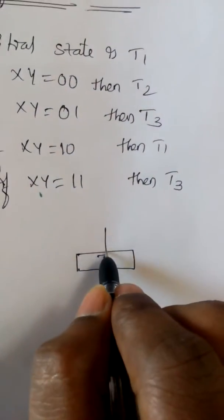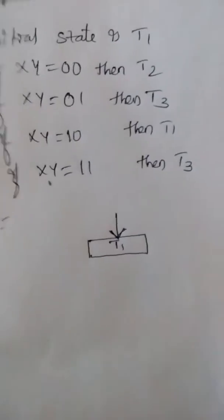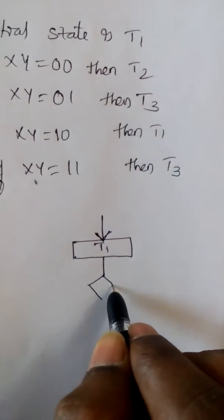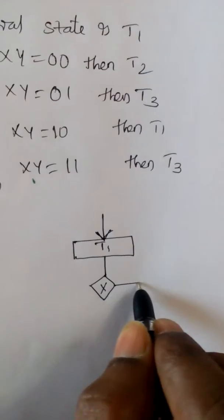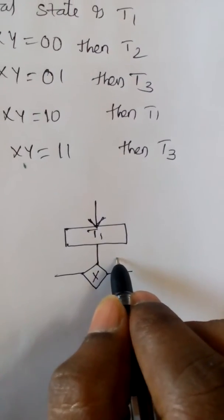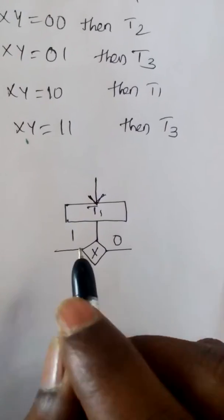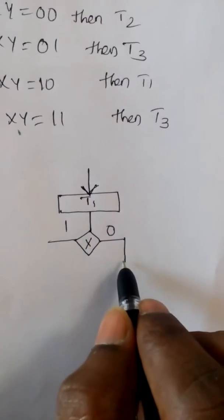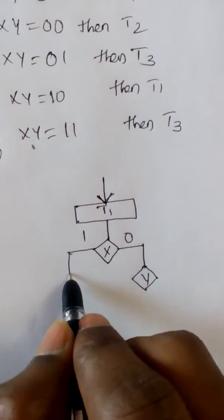The input is given to the state box T1. Now after the state box we go to the decision box, that is a diamond shape, where x is placed. X takes the decisions: 0 and 1. Now we take the y value, where y also takes some decisions.